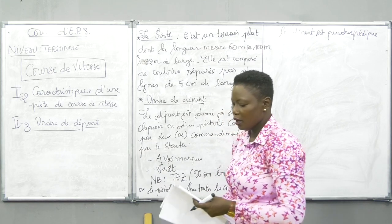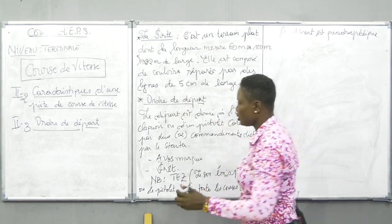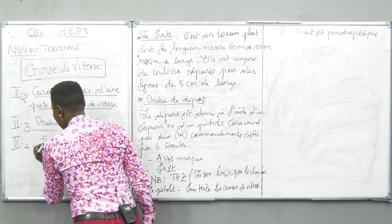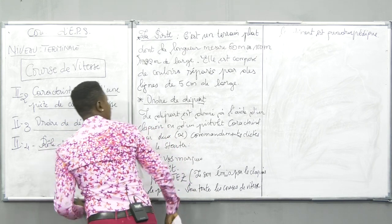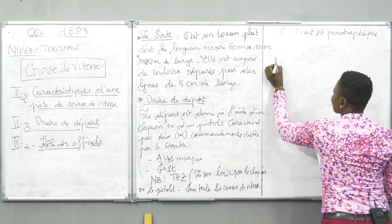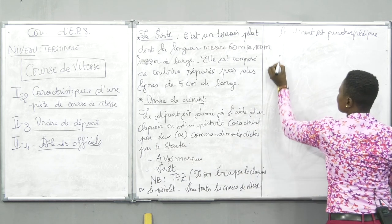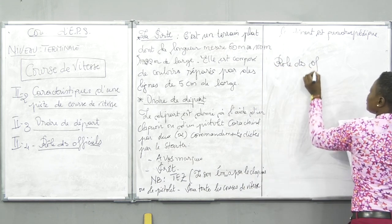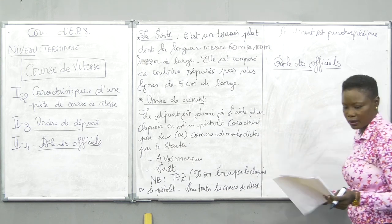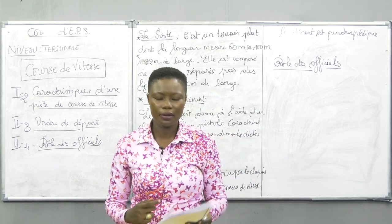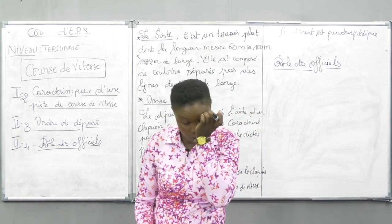Nous passons au rôle des officiels. J'avais dit tout à l'heure que je vous expliquerai ce que veut dire Starter. Nous avons un starter: c'est le secrétaire, celui qui donne le départ. Un juge d'appel: il est chargé de vérifier les noms des élèves inscrits sur la liste. Le chronométreur, c'est celui qui prélève le temps.